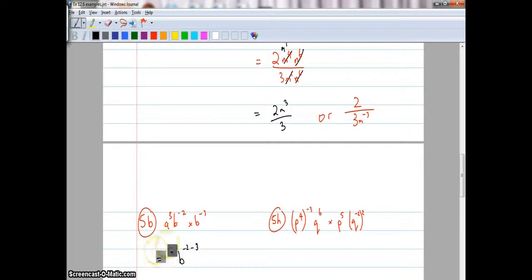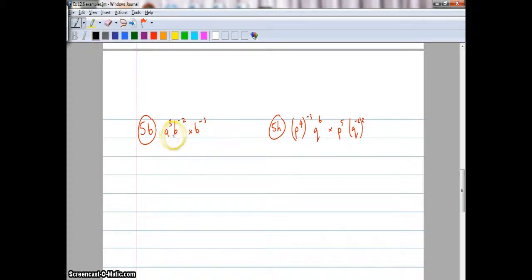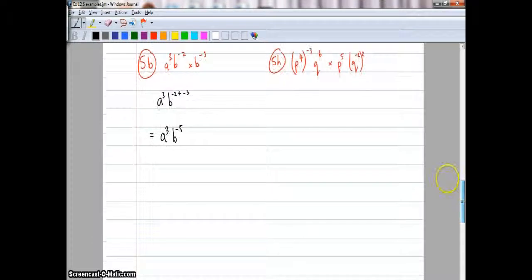Now we're going to have a go at question 5, and question 5 actually requires you to put it in positive indices. So we can't have this answer, we must have this answer over here. They all must be in positive indices. So let's have a go at question 5B. Everything, the bases are multiplied together, so I can add the powers. a3 b negative 2 plus negative 3, and that becomes just a3 b negative 5. I can't leave them in negative indices, I must make them positive. So that becomes a3 over b5. Because we dropped the b negative 5 down the bottom and changed the sign. Relatively straightforward that one.